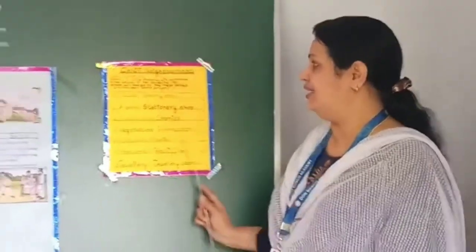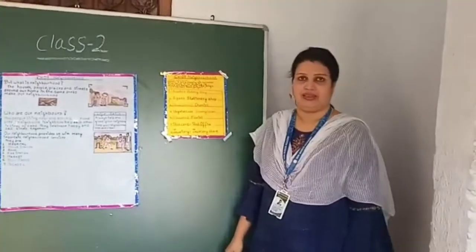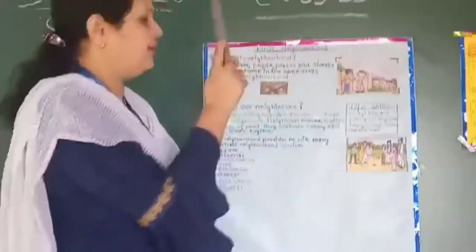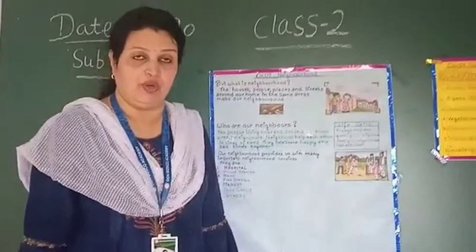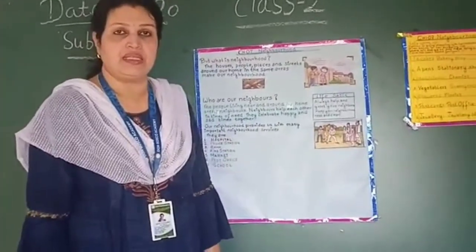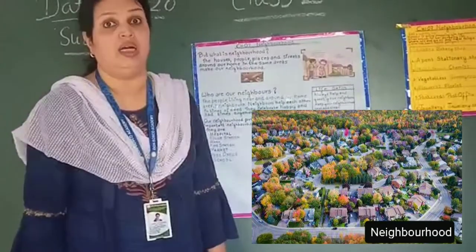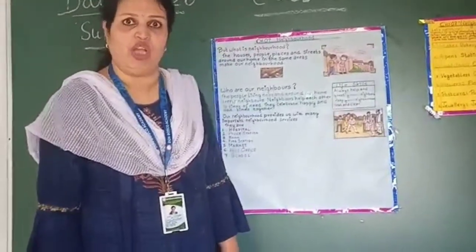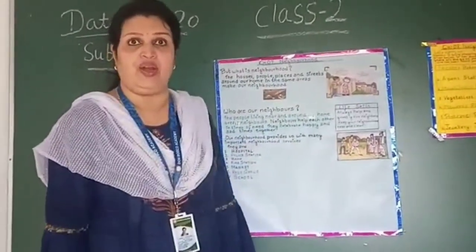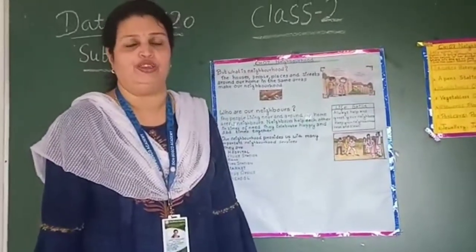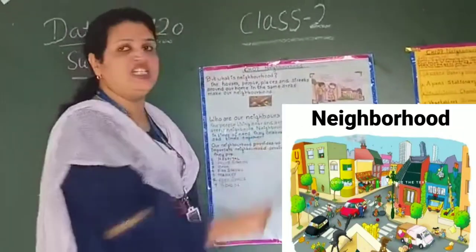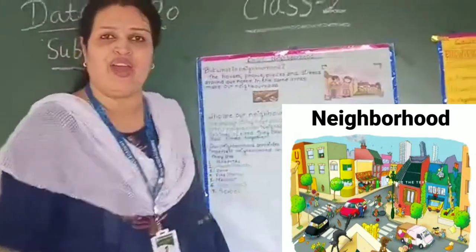This is the picture of Meetu going shopping with her mother. Now, what is neighborhood? The places that are close to our house form our neighborhood. The houses, people, places, and streets around our home in the same area make a neighborhood.